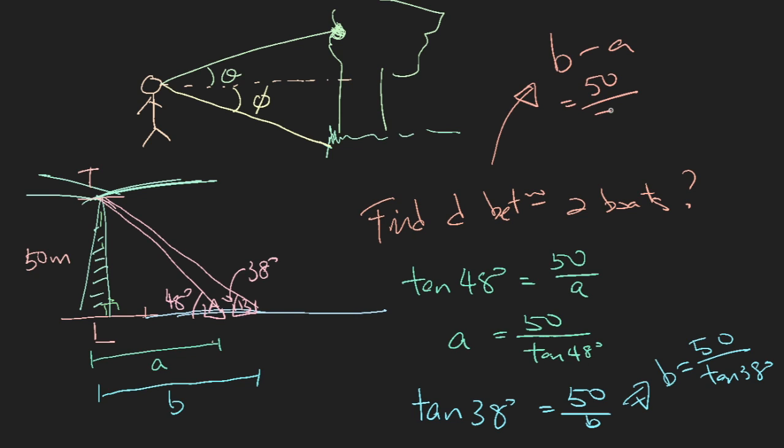And you have b, you also have a. If you plug the numbers into your calculator, you will have the answer. So three significant figures will be 19.0 meters. It's pretty near.